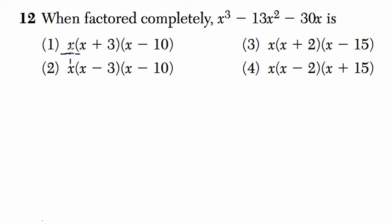Like in the first one, you have x and x plus 3 and x minus 10. What you could do with these three terms is multiply them to find out if it equals x to the third power minus 13x squared minus 30x.